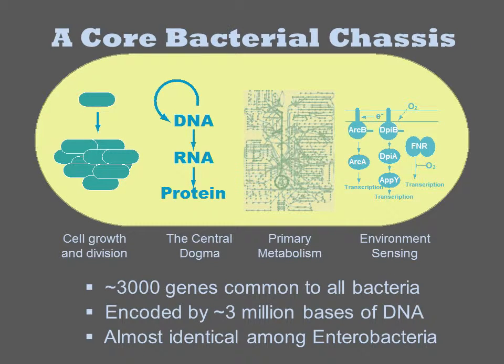Yet most of the genes in any given prokaryote are the same as all the others. There are a core set of processes associated with cell growth and division, the central dogma processes, primary metabolism, and environmental sensing that are all ubiquitous to all prokaryotes and largely invariant in their details.